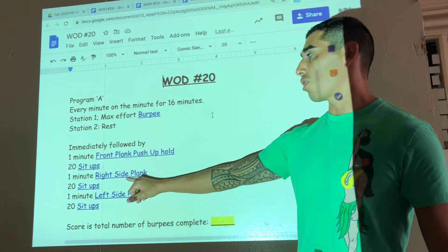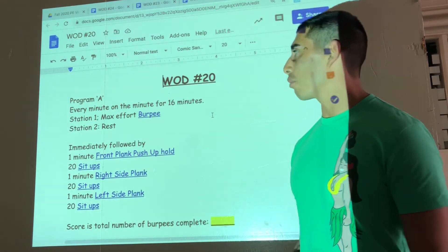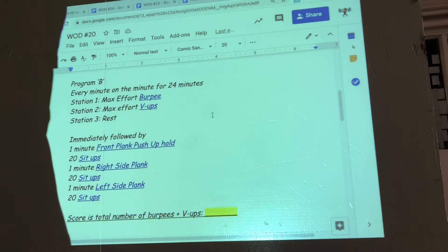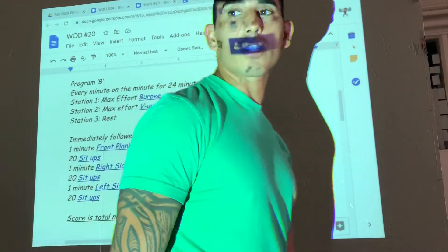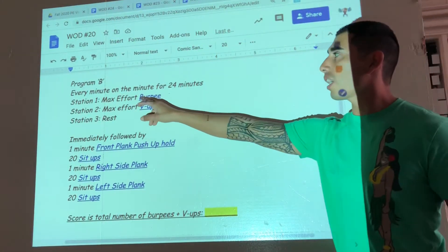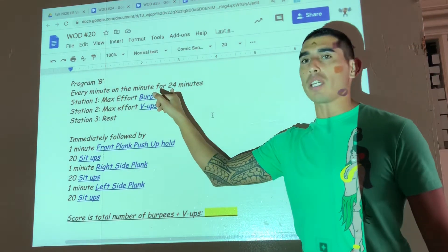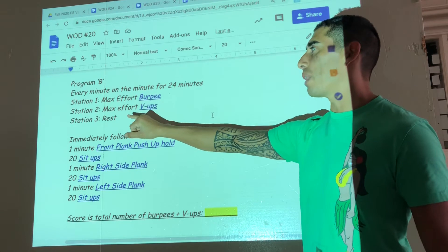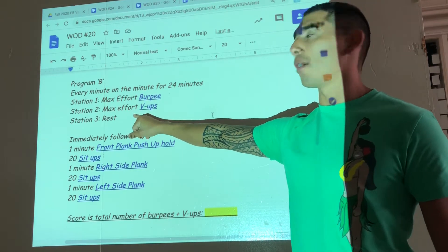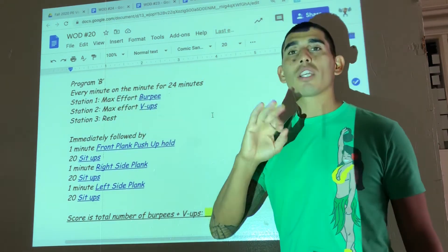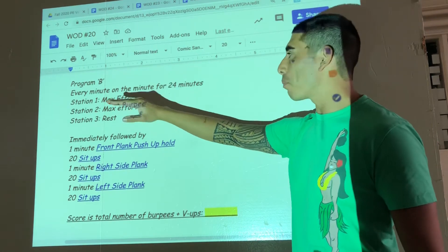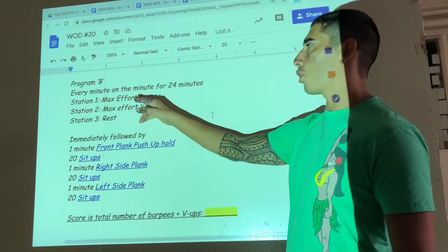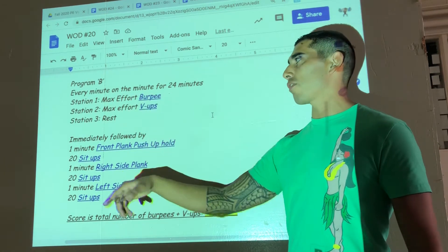If you are doing Program B - Program B for those of you who want to be challenged just a little bit more - it is a 24-minute EMOM. Minute one, you're doing max effort burpees. Minute two, max effort V-ups. Minute three, you get to rest. Then you start over: burpees, V-ups, rest. You'll do six sets of burpees, six sets of V-ups, and six sets of rest. That equals 24 minutes.